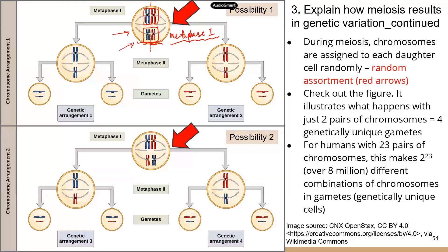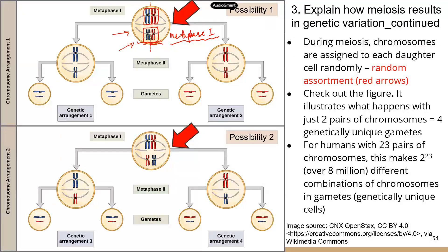In the first scenario, the two blue ones line up on one side and the two red ones on the other side — that's one possibility. But remember that this lineup is completely random. Homologous chromosomes don't make conscious decisions; it's just random movement of chromosomes in the semi-liquid environment of the nucleus. That leads to different combinations and different random results.